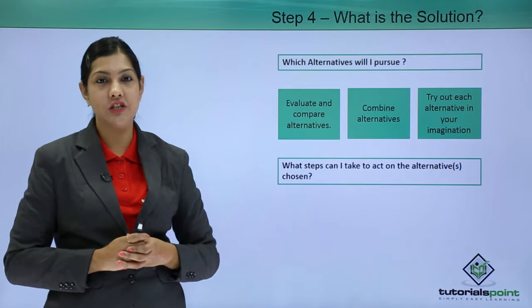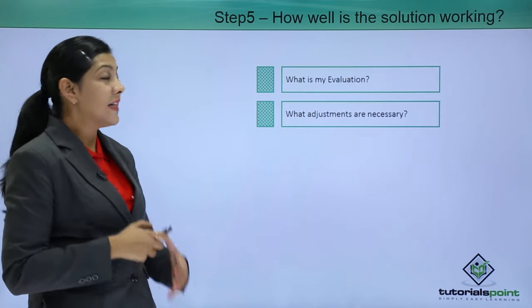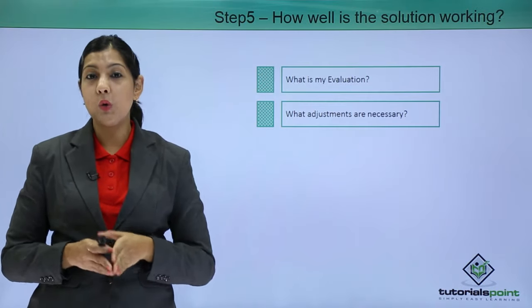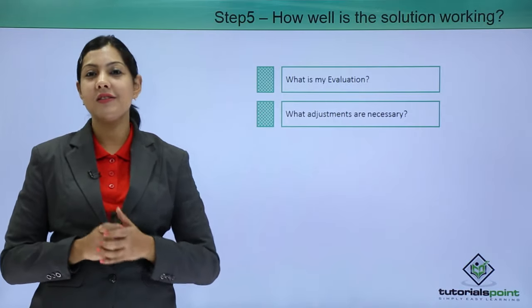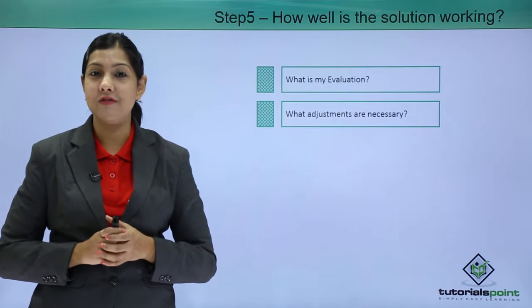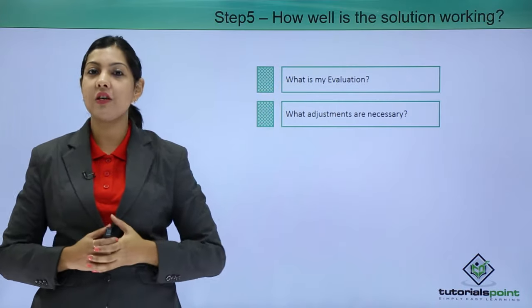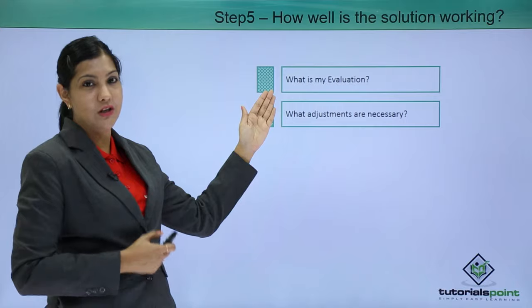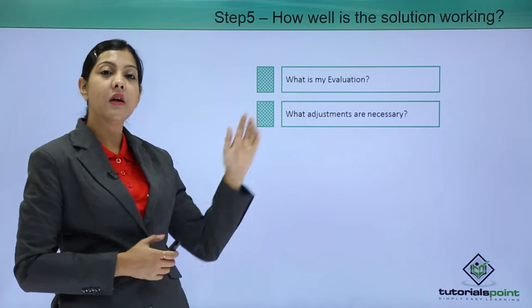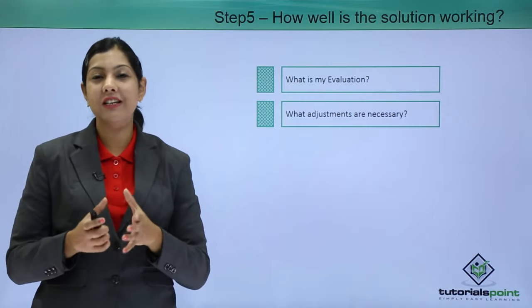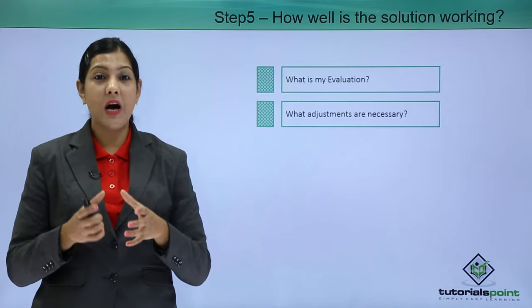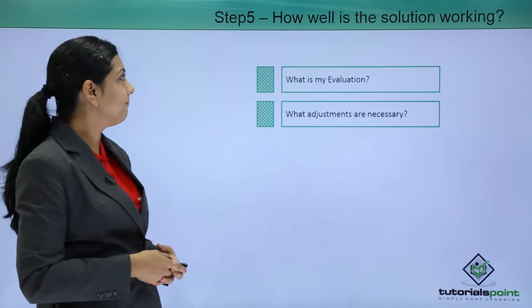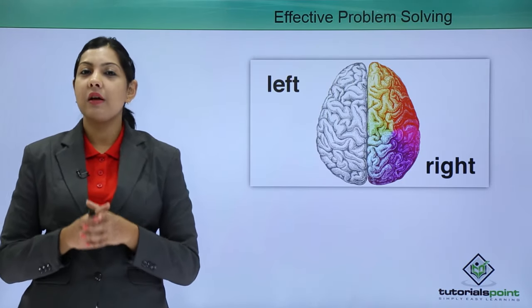Think about what steps you can take to act on the alternative chosen — after zeroing in on the best solution, consider the steps that will help you implement it. Step five — the last step: how well is the solution working? You will not know whether a problem has been solved until you ask yourself. Evaluate by asking: what is my evaluation of this solution? What is my feedback? And what adjustments are necessary? After a problem has been solved, you might need to adjust your life a little bit — how well you have accepted that and made adjustments is the final introspective question.